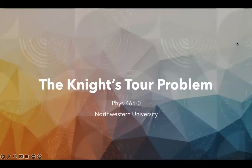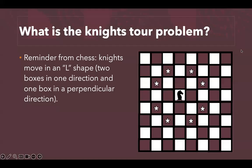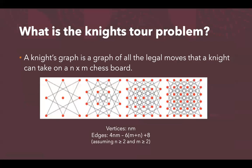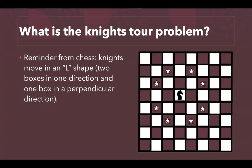Today, we're going to be discussing the knight's tour problem. Before we begin, it's important to understand how knights move in chess. Knights move in an L shape — that means two boxes in one direction and one box in a perpendicular direction. This has been demonstrated on the chessboard shown on screen.